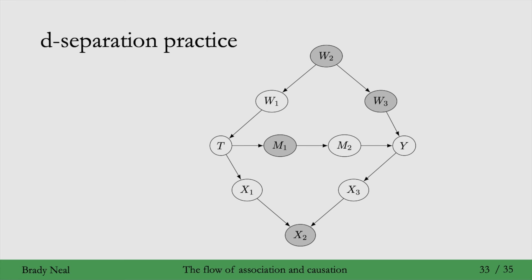What about if we were to additionally condition on X1? Yeah, conditioning on X1 fixes the problem that we introduced when we were conditioning on the collider X2. So now if we condition on all of these gray variables here, we do have that T and Y are d-separated by them.